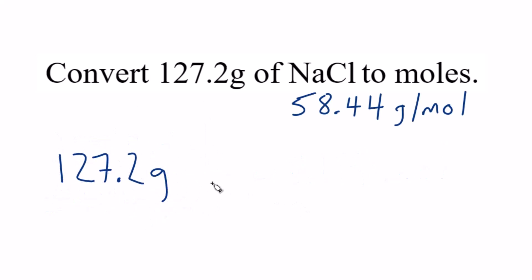So here we take our grams, and we multiply it by a conversion factor. And we know that we have grams. We want those to cancel out, so we need grams on the bottom, and we want to end up with moles, so we put moles on the top.